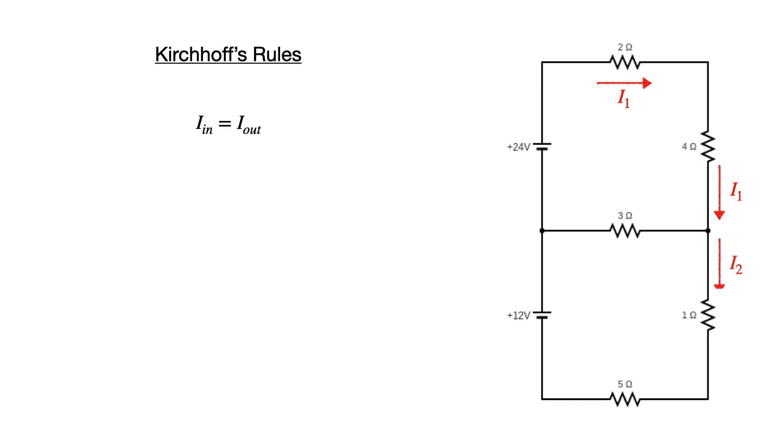Current two will move through the 1 ohm and 5 ohm resistor, while current three will move across the 3 ohm resistor. Current two and current three will then meet back up on the other side and join to form current one coming back to the 24 volt battery. So the statement for Kirchhoff's rule would look like current one, which is the one coming into the junction, would equal current two plus current three coming out of the junction.